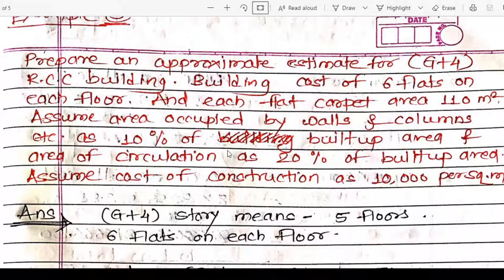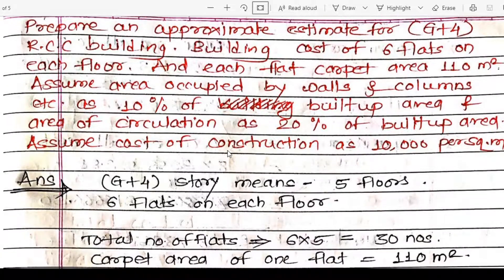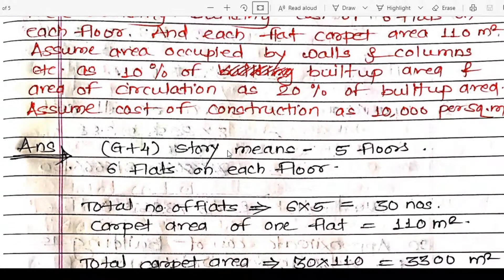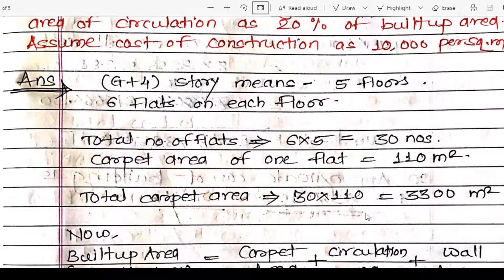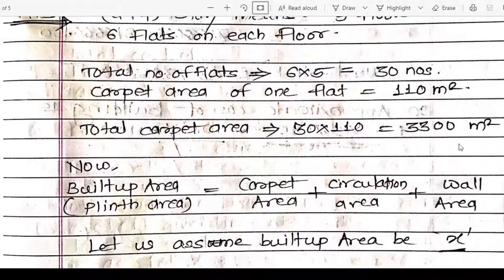The building consists of 6 flats on each floor, so total flats = 6 into 5 = 30 flats. The carpet area of one flat is 110 square meters. So the total carpet area is 30 flats into 110 square meters, which equals 3,300 square meters. This is the total carpet area of the building.